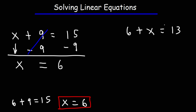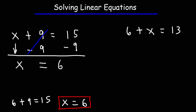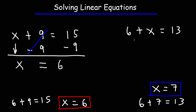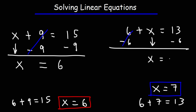Now for the next one: 6 plus x is 13. What number does 6 plus that number add up to 13? We know that 6 plus 7 is 13, so x is going to be 7. To show our work, perform the opposite of plus 6 — subtract both sides by 6. These cancel, we bring down the x, and we get x is equal to 13 minus 6, which is 7.